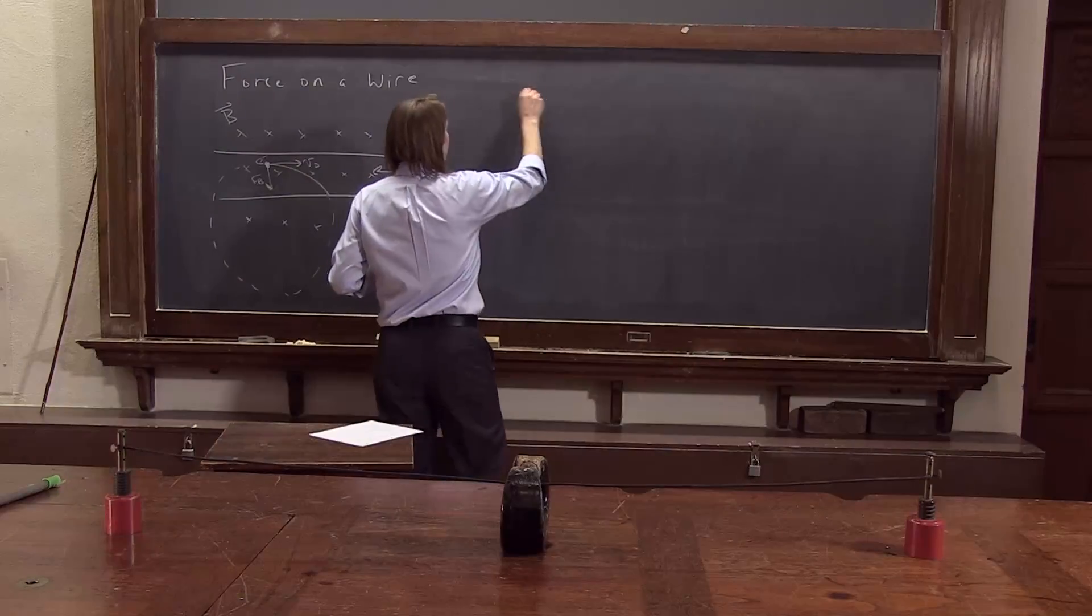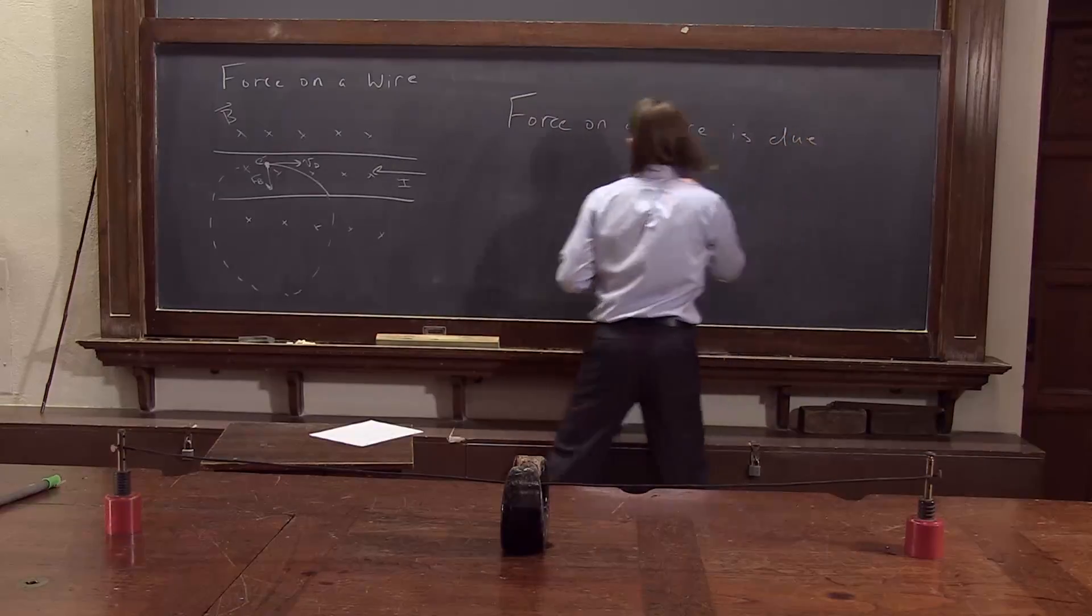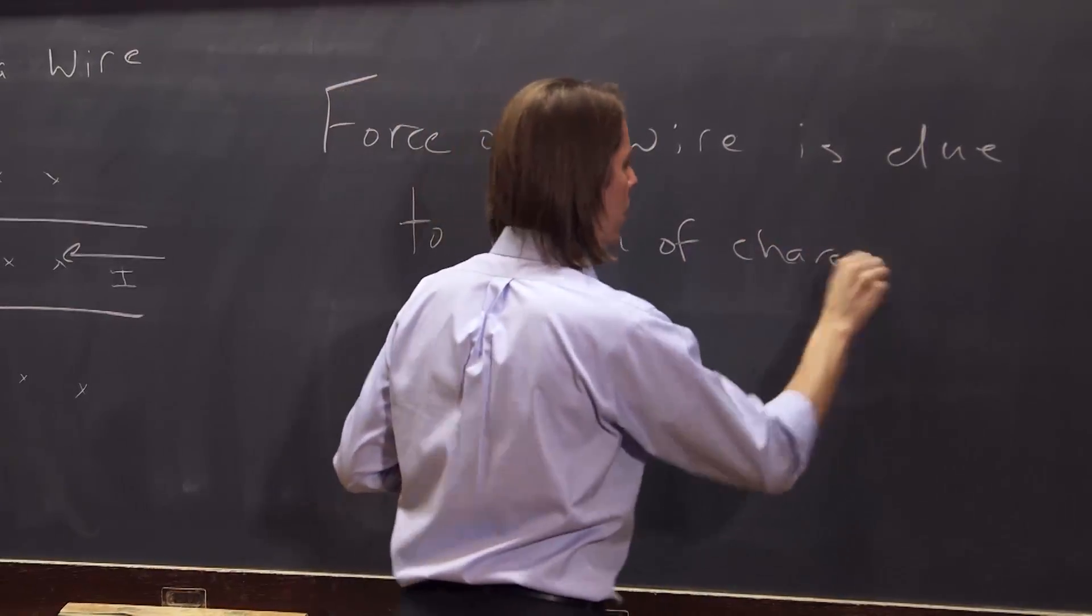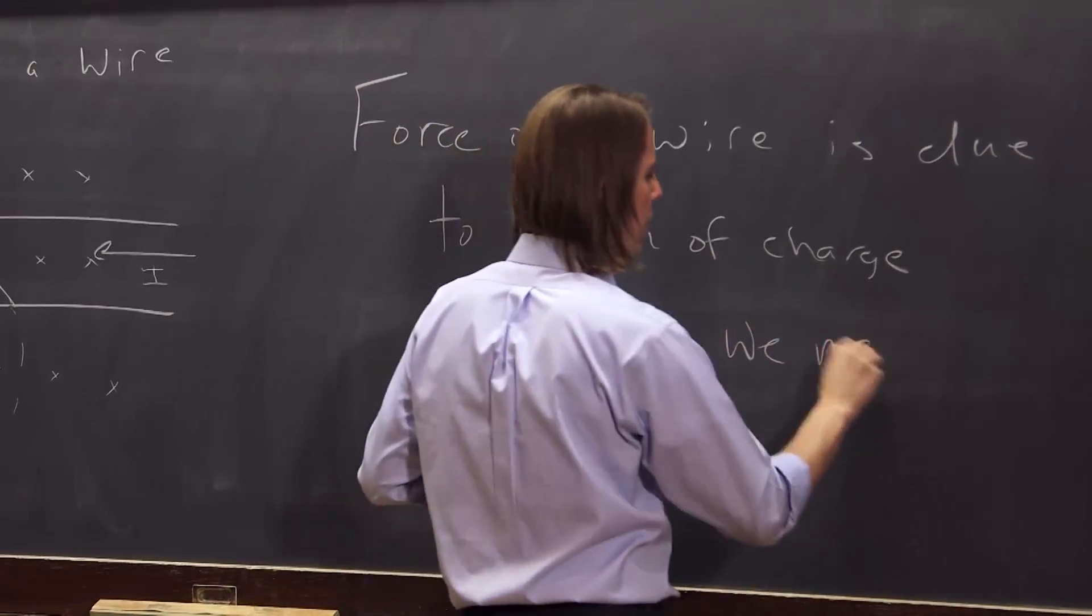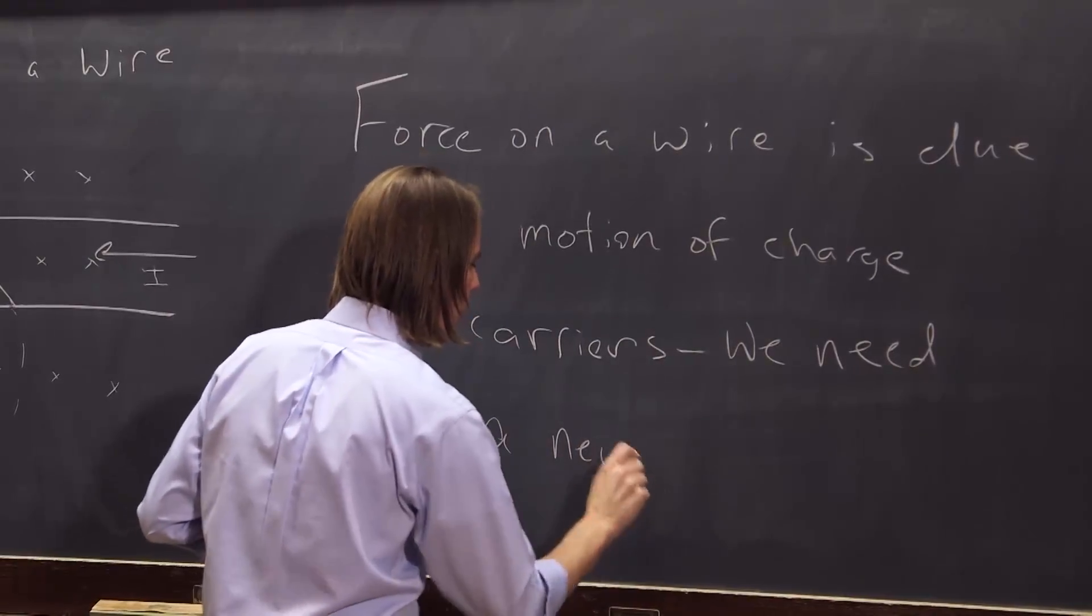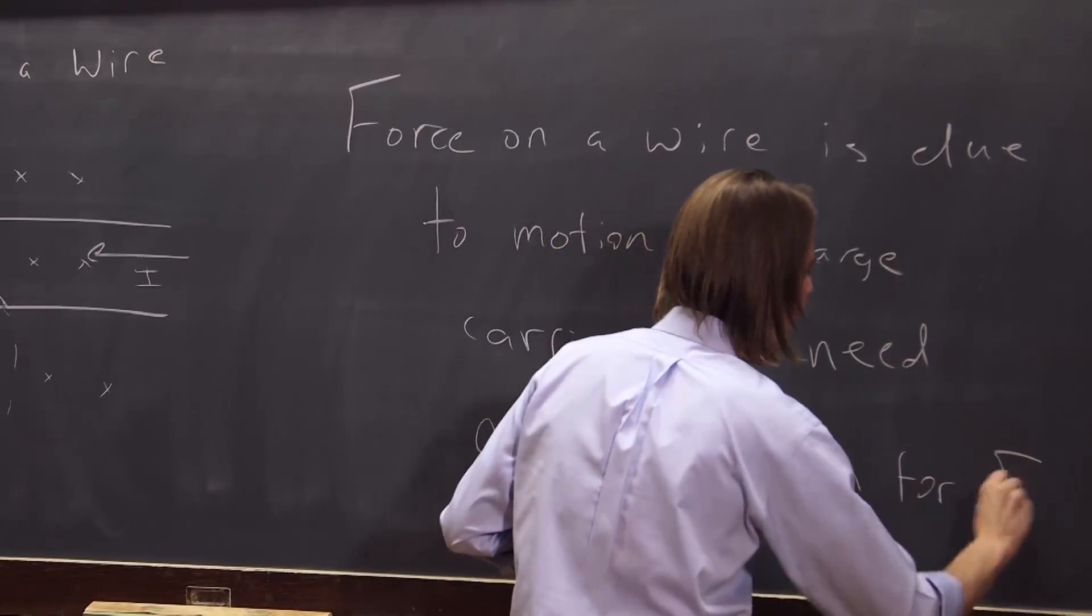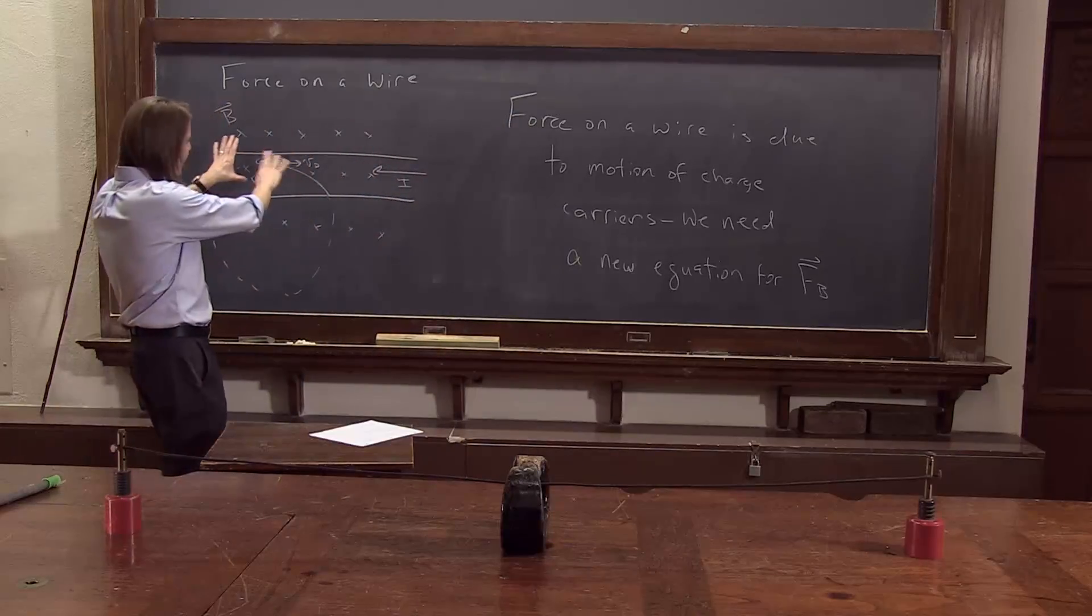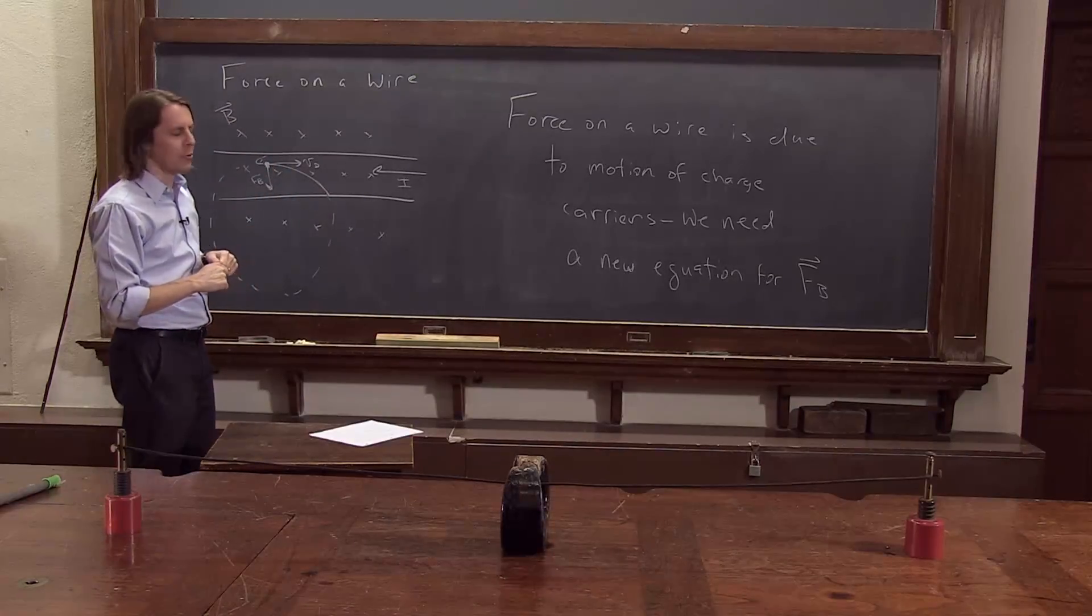So, the force on a wire is due to the motion of the charge carriers, and we need a new equation for FB. It's going to be essentially the same, but actually, in terms of the forces you get and the way it behaves, it's different, because those charge carriers are not free. So, let's think now about what that force should be.